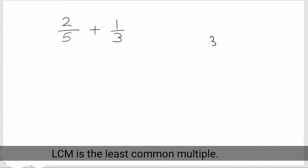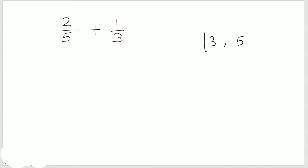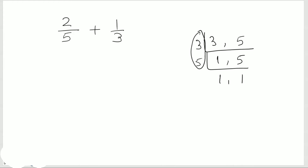Or you can do it this way: 3 and 5. 3 times 1 is 3, and 5 times 1 is 5. So if I multiply these two — 3 times 5 — I get 15, which is the LCM.